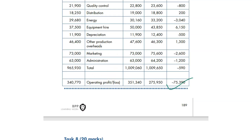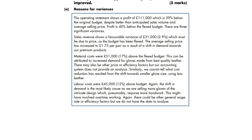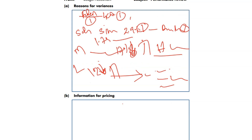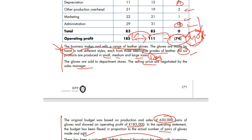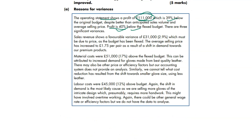The model answer also addresses the sales manager's pricing policy requirements: knowing the cost of each range, variable costs, and fixed costs per range. For the failings section: suggest standard costing should be implemented — two styles × three leather grades × three sizes = 18 products, each needing standard costs. This will provide detailed cost data and improve budgetary control. The flexible budget is powerful but standard costing would further improve the system.